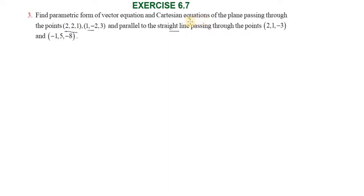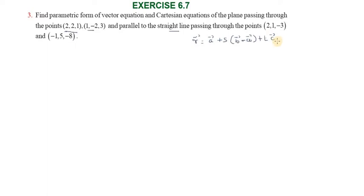The parametric form of vector equation is: r vector equals a vector plus s into (b vector minus a vector) plus t into c vector, where s, t belong to real numbers.